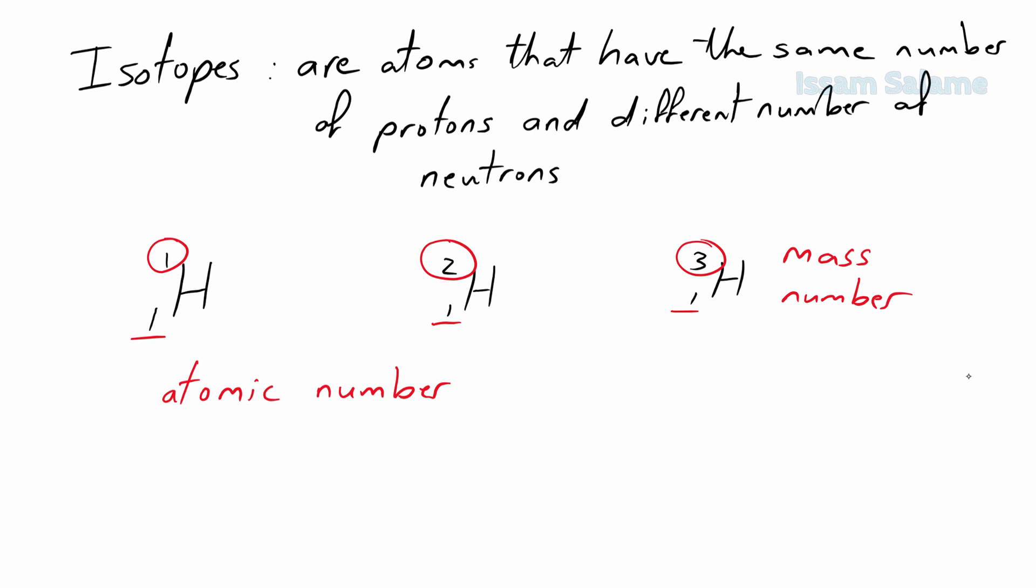And to calculate the average atomic mass of hydrogen, we should multiply each of these masses by the percentage of abundance of each one of these isotopes, as we're going to see in the following example.